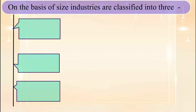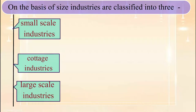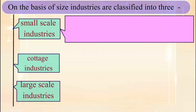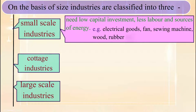On the basis of size, industries are classified into three: small scale industries, cottage industries, and large scale industries. Small scale industries need low capital investment, less labor, and sources of energy. For example, electrical goods, fan, sewing machine, wood, rubber, etc.